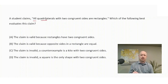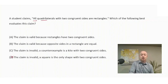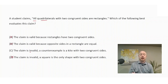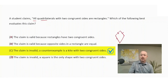Choice D is eliminated immediately — it's a false statement, since many quadrilaterals have two congruent sides, including a rhombus, rectangle, and kite. Choices A and B have correct statements but focus only on rectangles, not all quadrilaterals. Choice C is correct: the claim is invalid, and the counterexample is a kite with two congruent sides. A kite has consecutive sides congruent — one pair of sides congruent to each other, and another pair congruent to each other — so the correct answer is C.